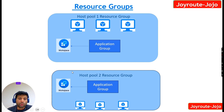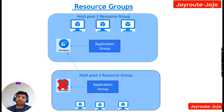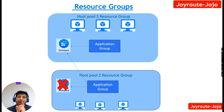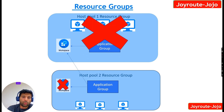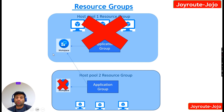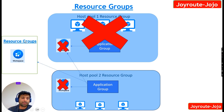Consider a user who has access to both application groups — the first host pool application group and the second. When they log in, they would see two workspaces in their virtual desktop feed. Another option is to add the application from the second host pool to the existing workspace, so the end user sees applications from both host pools in one workspace. The issue is that if both host pools have a different lifecycle and we remove one, the workspace has a dependency on host pool two and cannot be removed completely.